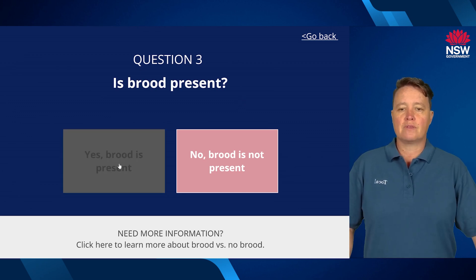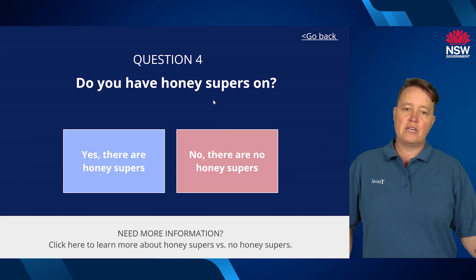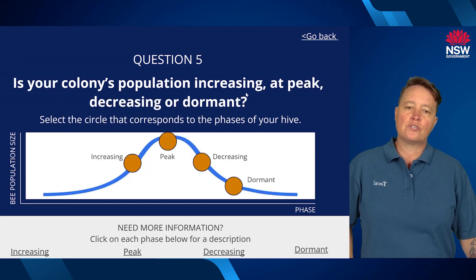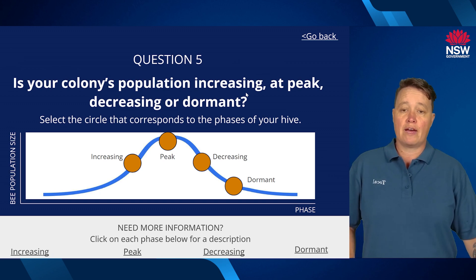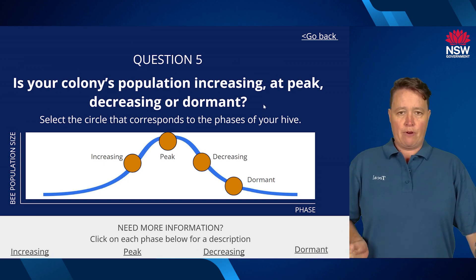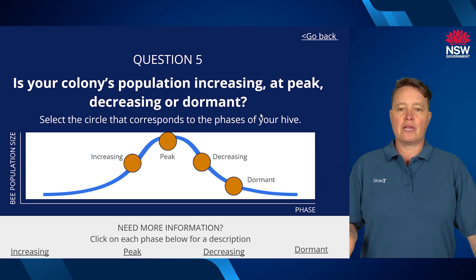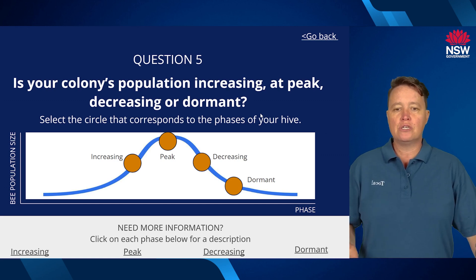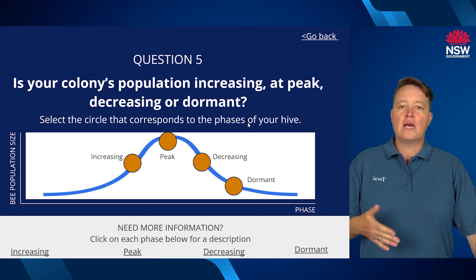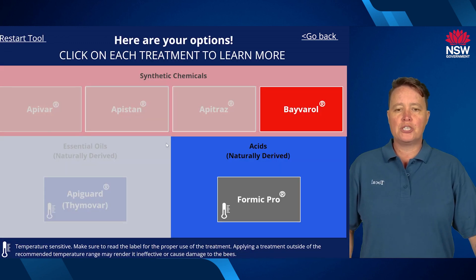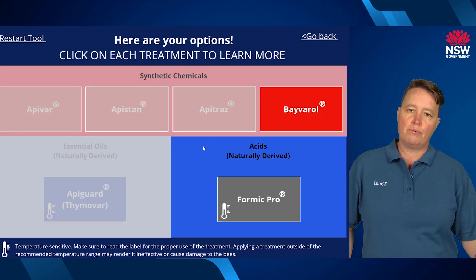Do you have brood present? If you click on that, it takes you to: do you have honey supers on? If you have honey supers on, click that. The final question before taking you through to the available products is: what period of development is your hive at? Is the population increasing, at peak population, decreasing, or if you're in a cold area, is your colony dormant? Select the phase you are currently in — let's say we're at peak population — and that takes you through to the treatment options page.